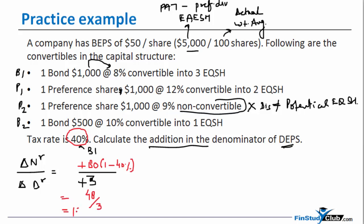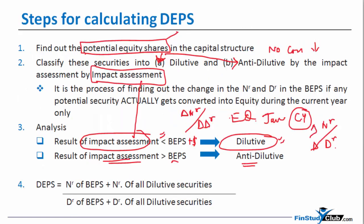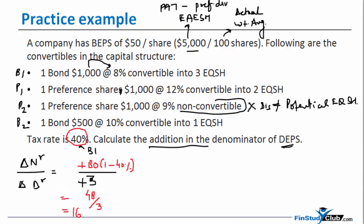What does my step say? That if the result of the impact assessment, which is 16 that I'm getting, is lower than the basic EPS which is 50, then my security is diluted. So therefore I conclude here that my B1 is a dilutive security.